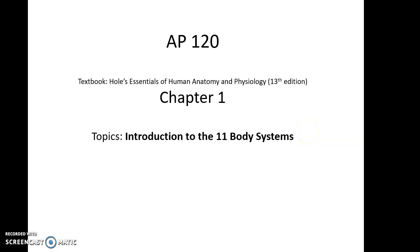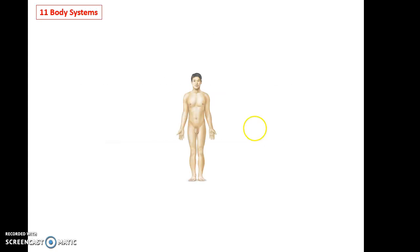AP 120, Chapter 1, Topics: Introduction to the 11 Body Systems. Here is the organism, and the human organism has been broken down into 11 different organ systems, or you can also call them body systems.